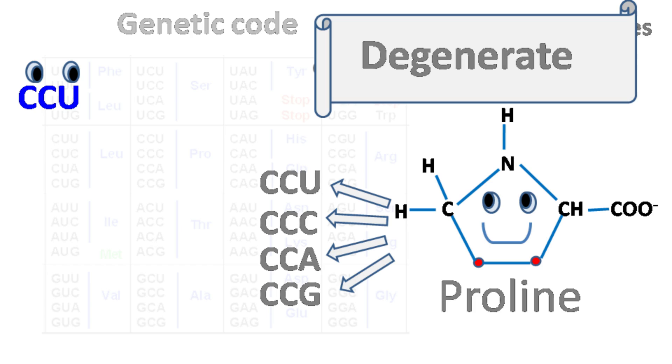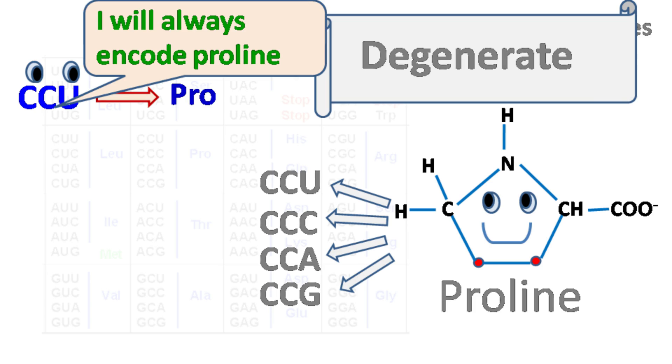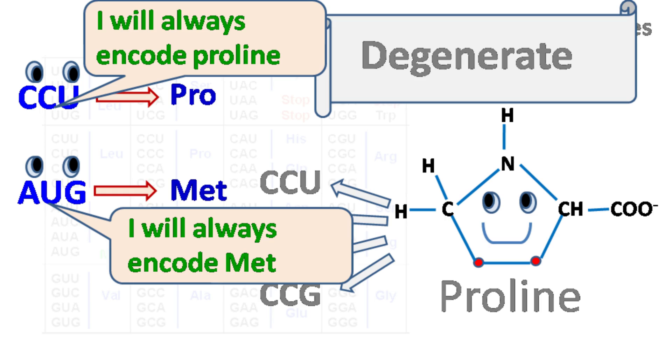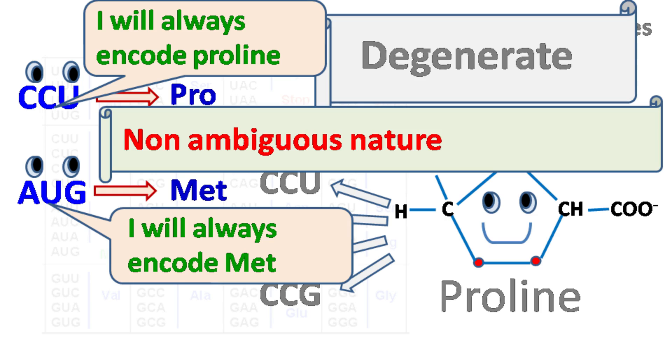However, a single codon will always code for a single amino acid. For example, CCU always codes for proline. AUG always codes for methionine. This property of genetic code is called nonambiguity.